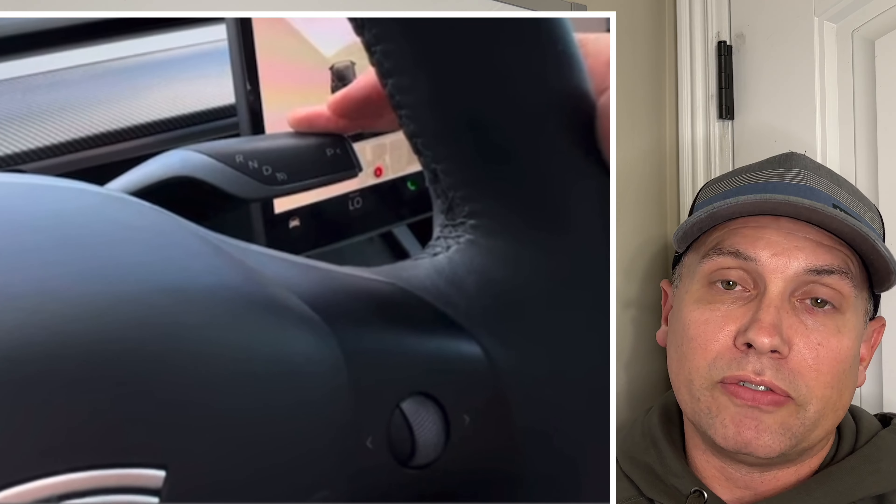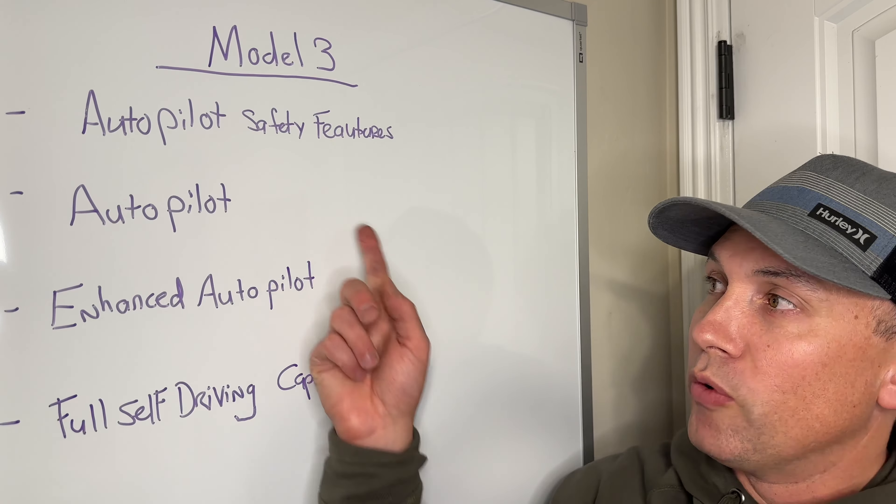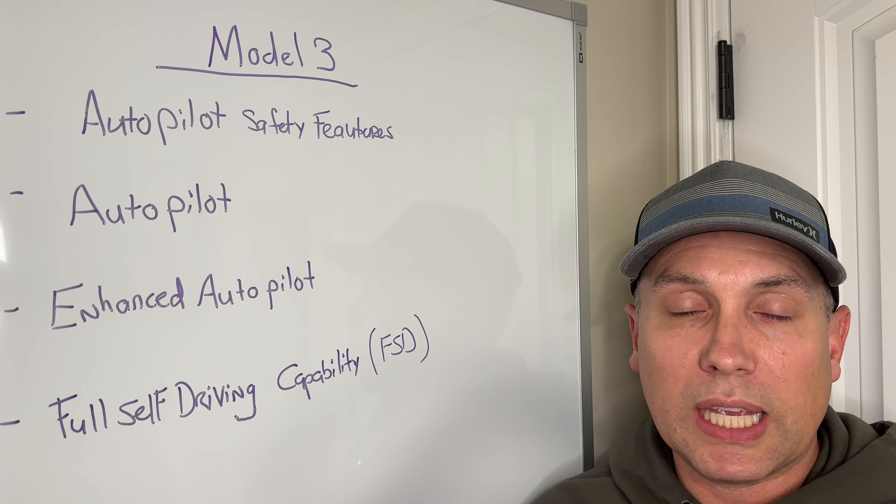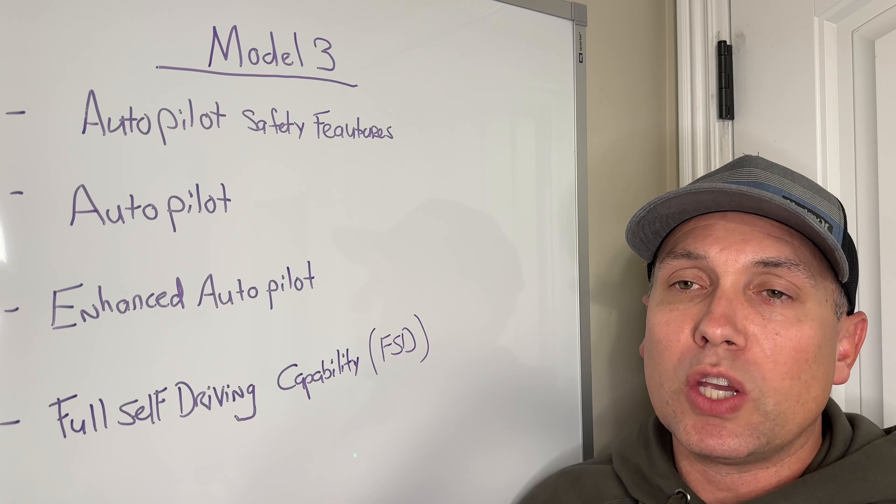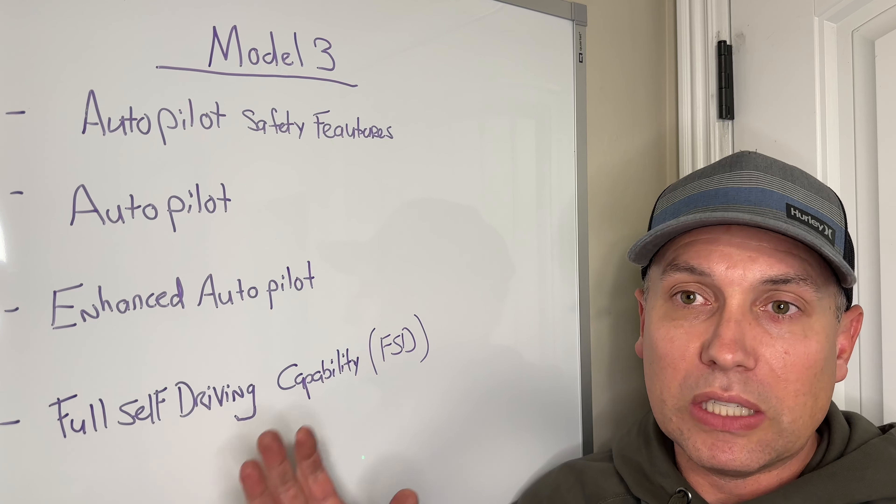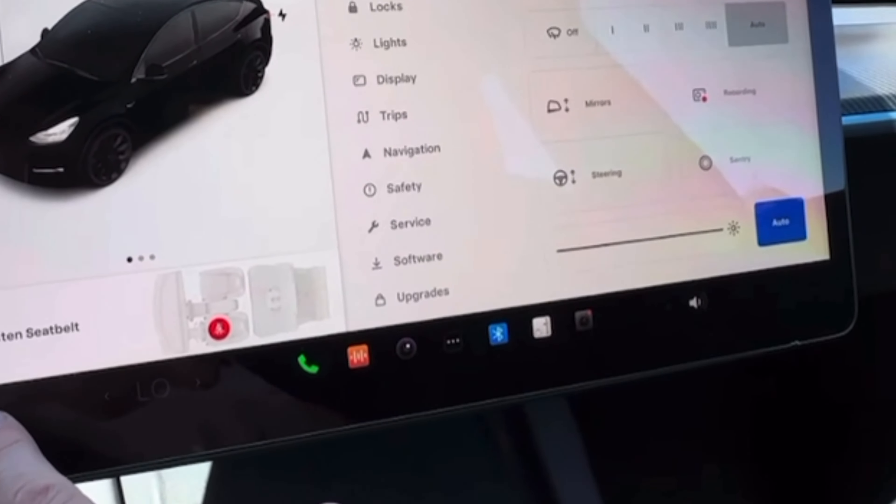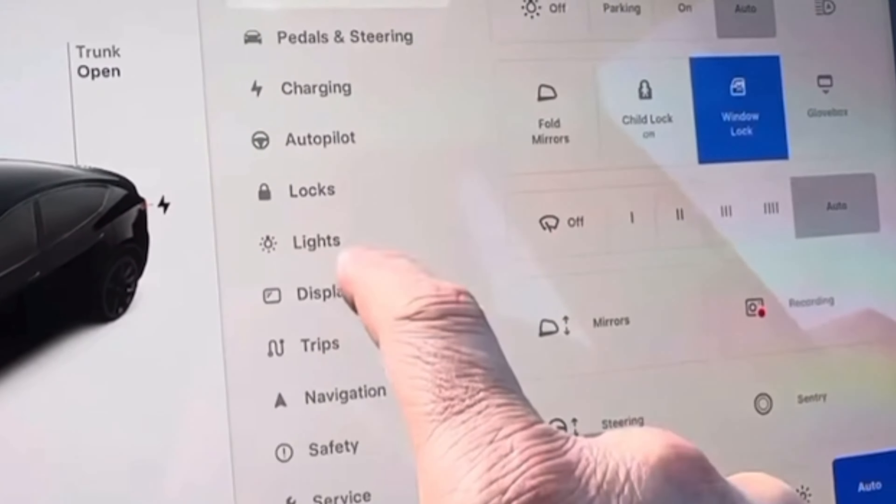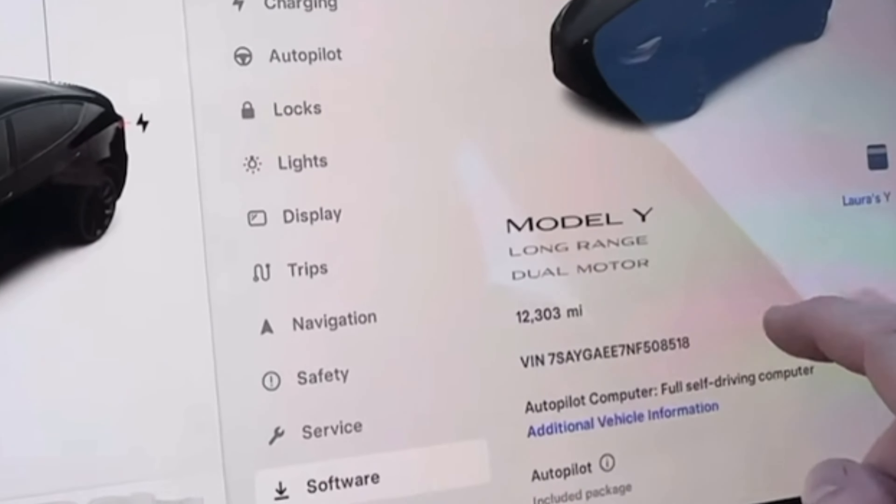And so there's a big cost difference in these cars and the features. For example, I want to show you here on the board, the four different things you're going to run into when it comes to looking at one of these older Tesla Model 3s. When you're looking for a car, probably the first thing you want to have the seller or the dealer do is go into the software screen. And when you hit the software screen, it shows a screen where it shows the VIN number, it shows the model, it shows whether it's the long range, dual motor, rear wheel drive performance.